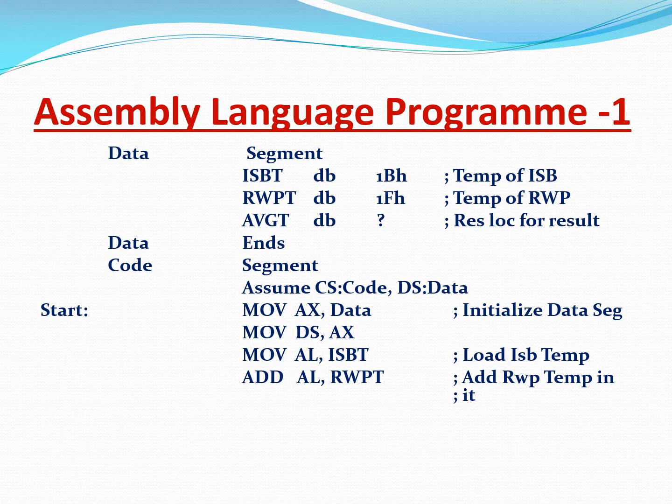Next we see 'RWPT' — that is Rawalpindi temperature — similarly 'RWPT DB 1Fh', and in the comments we have written 'temperature of Rawalpindi'. Then it is 'AVGT' — we have reserved an average temperature location, which is what we are going to calculate, so we have put a question mark because we don't know what the average temperature will be. Reserve the location for the result. Next is 'DATA ENDS' — the end of the data segment.